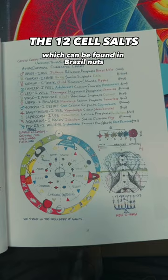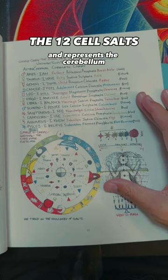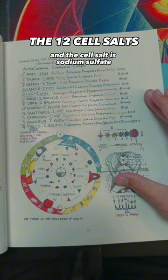April 21st to May 21st belongs to Taurus and represents the cerebellum, which is the little brain and represents the baby stage of the year, and the cell salt is sodium sulfate, which can be found in kale.